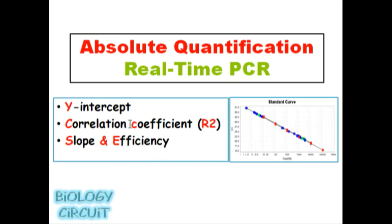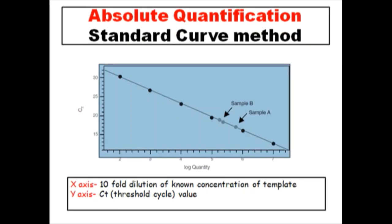First of all we need to understand how real-time PCR is different from conventional PCR. In conventional PCR we do end-point analysis, meaning after the completion of a PCR reaction we run the amplified product in agarose gel. But in real-time PCR, that amplified product can be detected and measured as the reaction progresses - we can detect and measure the amplified product in real-time.